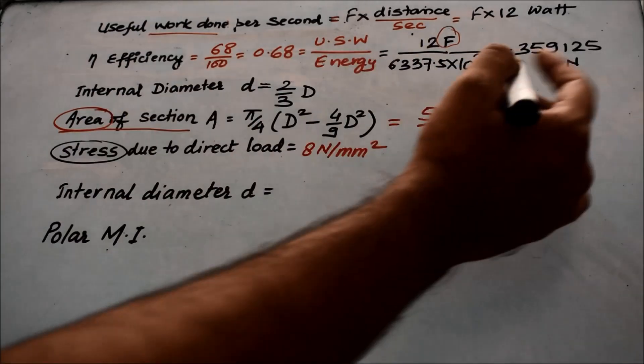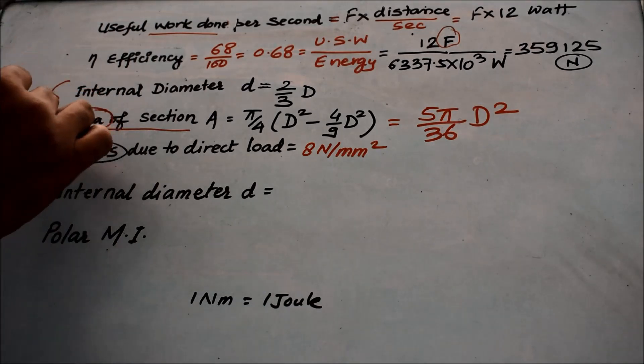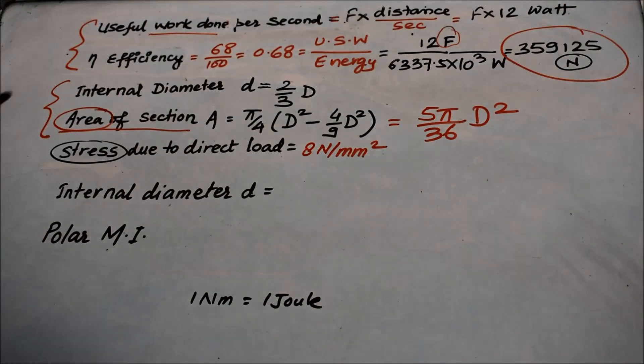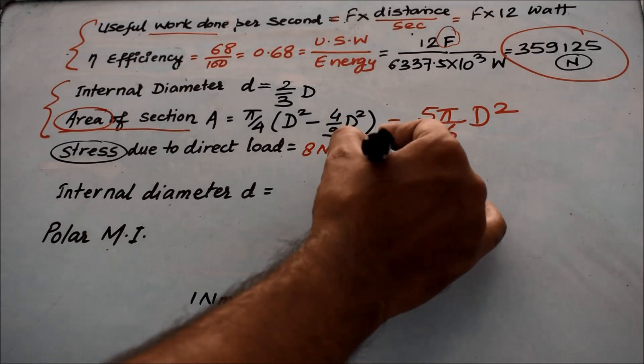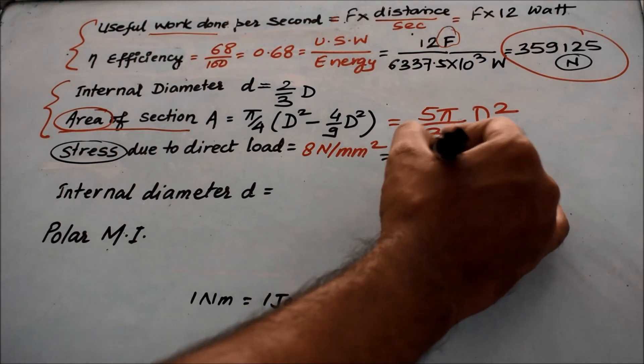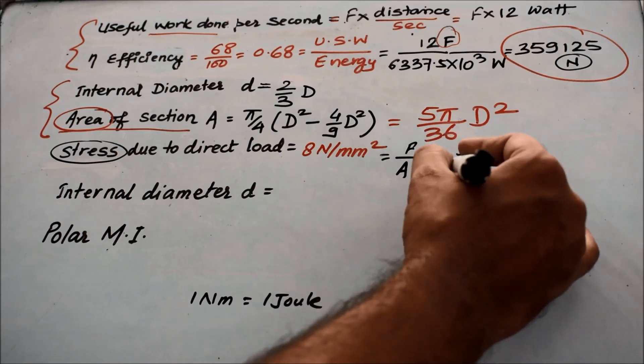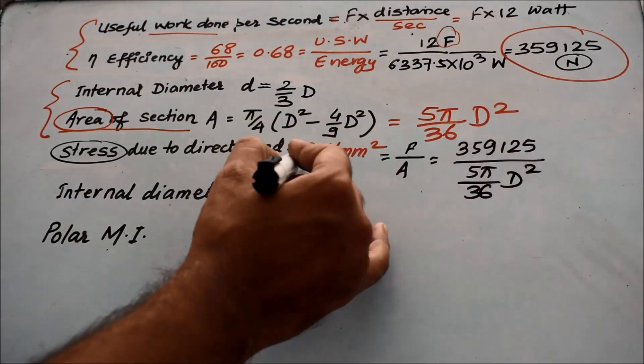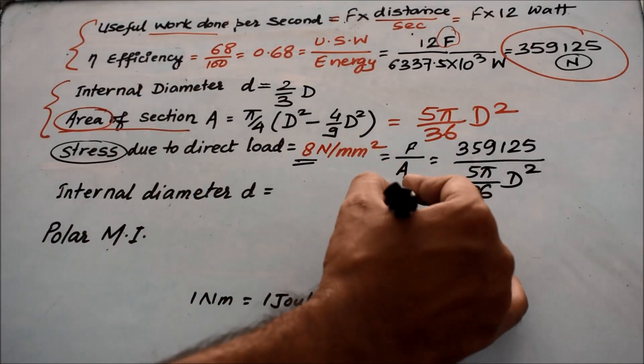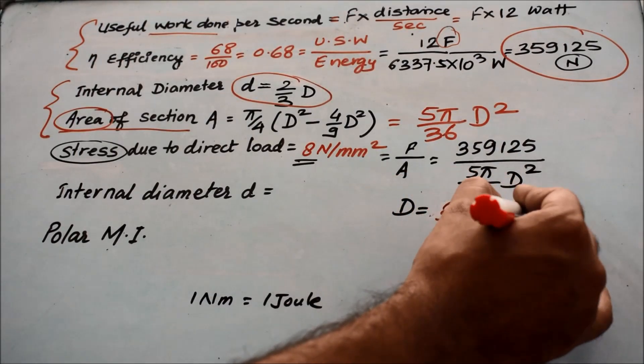The value of force we have got. Now you can have the basic formula of stress is force upon area. I will put the values: 359,125 in Newton divided by area, and this whole value equals 8 Newton per mm square. If you do the simplification of this equation, you will get the value of capital D as 320.75 mm.